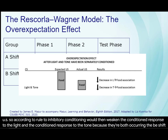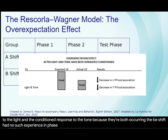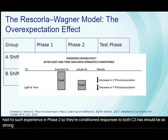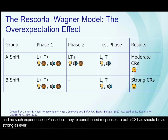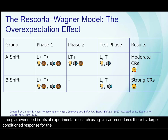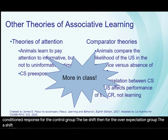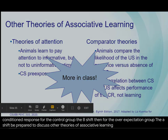The B shift had no such experience in phase two, so their conditioned responses to both CSs should be as strong as ever. Indeed, in lots of experimental research using similar procedures, there is a larger conditioned response for the control group, the B shift, than for the over-expectation group, the A shift. Be prepared to discuss other theories of associative learning in class.